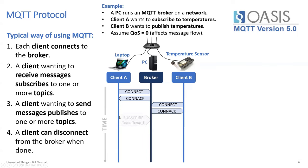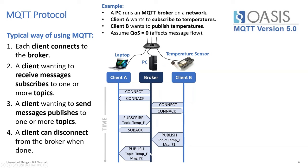Client A, wanting to receive temperature, subscribes to the topic 'temperature_to_F'. The broker acknowledges — Client A is subscribed and will receive any messages published to that topic. Then Client B publishes to the topic 'temperature_F' with the message value 72. The broker uses a publish packet to forward that data to Client A, who has subscribed to that topic. That's the full exchange of connecting and messaging between clients and the broker.